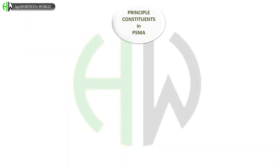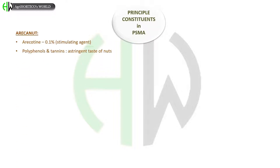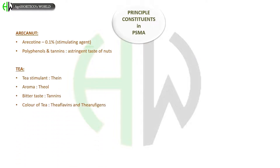Firstly, in areca nut, arecoline is present at about 0.1%, which is a stimulating agent. Polyphenols and tannins are responsible for the astringent taste of nuts. In tea, theine is the tea stimulant, and aroma of tea is due to theol. Bitter taste in tea is due to tannins, and color of tea is due to the presence of theaflavins and thearubigins.